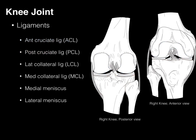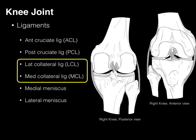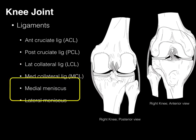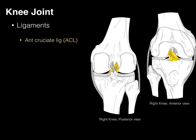Now, the ligaments — there's a lot of support to help with this knee joint. We have two cruciate ligaments, two collaterals, and two menisci. The first is the anterior cruciate ligament. It arises from the anterior surface of the tibia and then inserts on the posterior part of the distal femur.